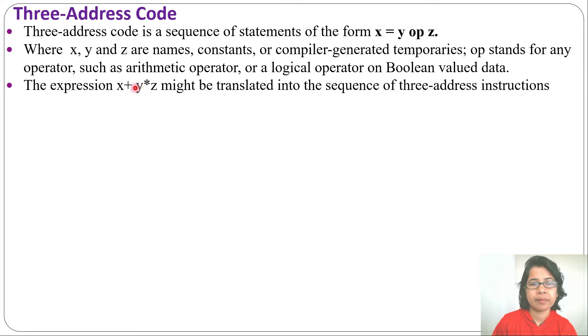You need to find which has highest precedence. Multiplication has highest precedence over plus, so first we should evaluate multiplication. First we will write three-address instruction for y * z, so we will write t1 = y * z. Now this y * z is in t1. Next we will add x with t1, so x + t1 = t2. This is the three-address instruction for this.